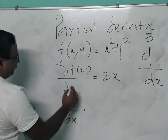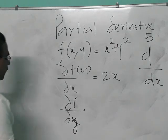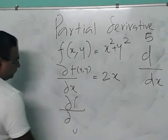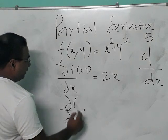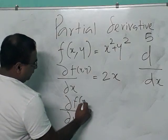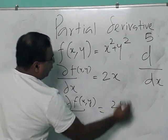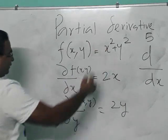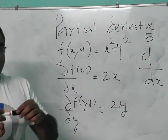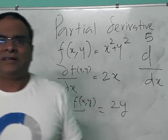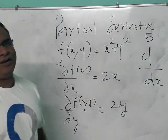In the same way, ∂/∂y of f(x, y) should be 2y, because here x is a constant, so x squared is a constant. The derivative of a constant is 0. This is the concept of partial derivatives.